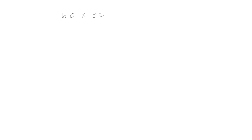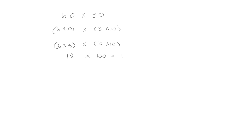Let's try one more — this time without drawing the model. 60 times 30. We know this is 6 times 10, and this is 3 times 10. We're going to group the two non-10 numbers together — the 6 and the 3 — and multiply those. Then we take the two tens and multiply them together. 6 times 3 is 18, and 10 times 10 is 100. So we have 18 hundreds, or 1,800.